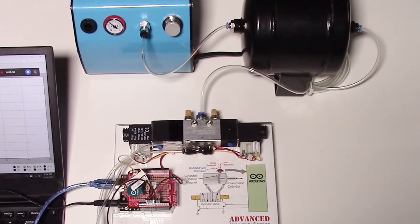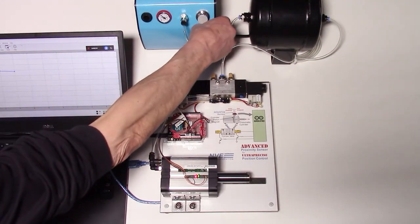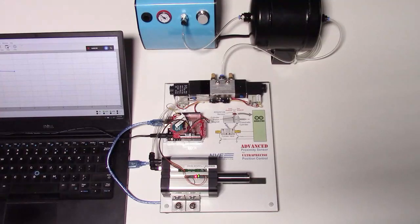A compressor with a reservoir tank provides the air pressure. As we let the pressure bleed down, the speed decreases.